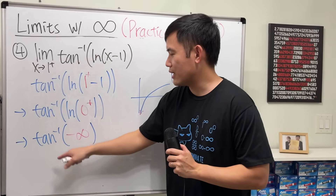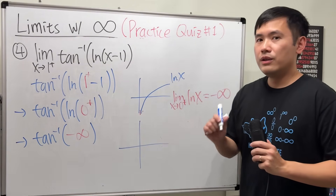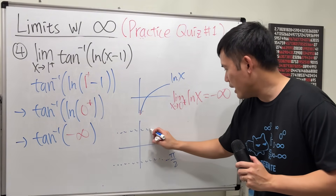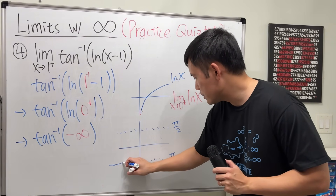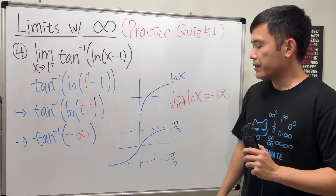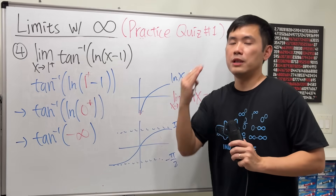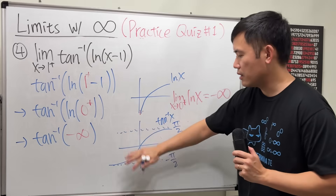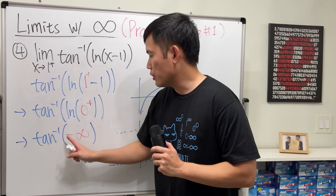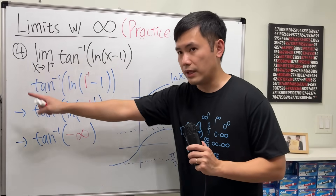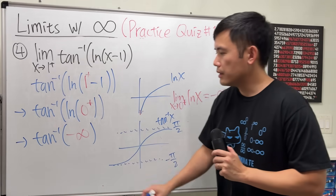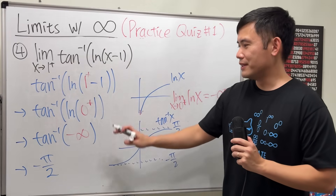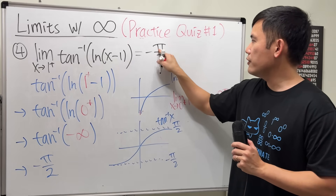Finally, what is inverse tangent of negative infinity? We refer to the arctan graph, which has two horizontal asymptotes: one at negative π/2 and one at positive π/2. As x goes to negative infinity all the way to the left, the y-value approaches negative π/2. So inverse tangent of negative infinity equals negative π/2, and that is the answer for number 4.